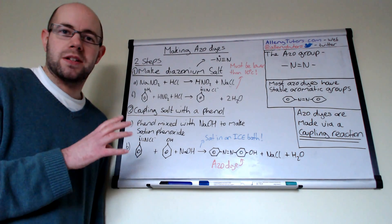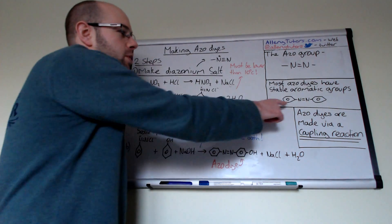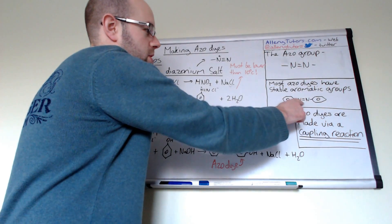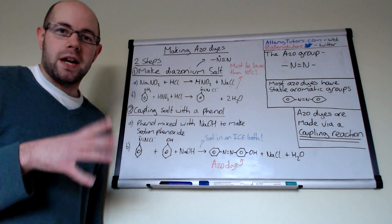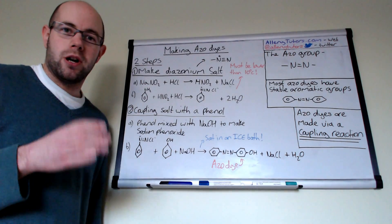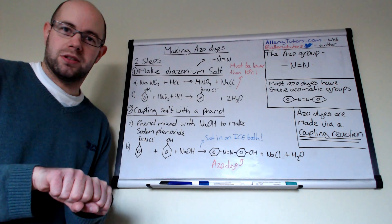Most azo dyes actually have an aromatic aspect. For example, you'll have your azo group in the middle with your aromatic groups either side. Azo dyes are made by what we call a coupling reaction, which is basically the joining of two molecules together.